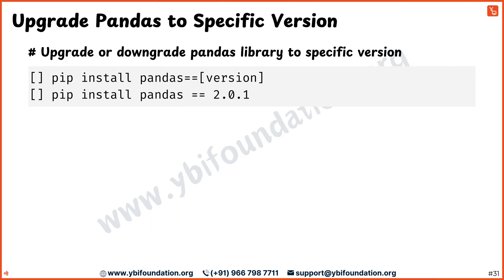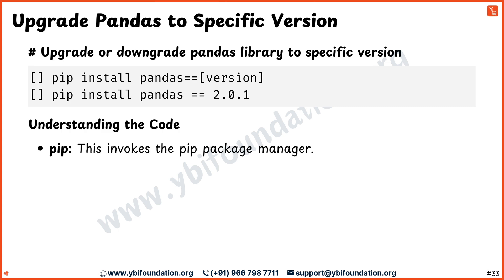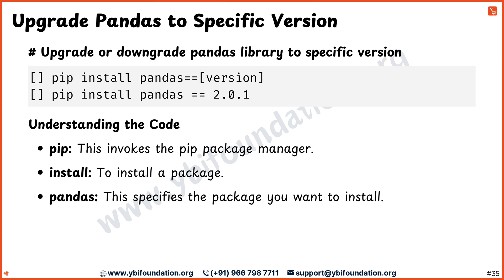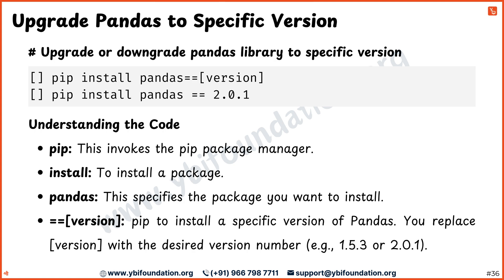Let's explore how to upgrade or downgrade the pandas library to a specific version. First, pip invokes the pip package manager, the tool you use to manage Python packages. Then, we have install, which tells pip to perform the action of installing a package. Next, you specify pandas, which is the name of the package you want to install or update. Finally, we use ==version. This instructs pip to install a specific version of the pandas library. You replace version with the version number you need, for example 1.5.3 or 2.0.1. So the command pip install pandas==version_number tells pip to install that specific version of the pandas library, whether it's an older version or a new one.